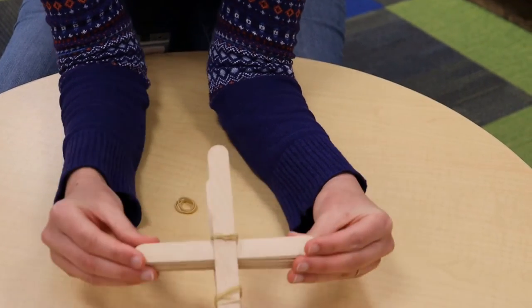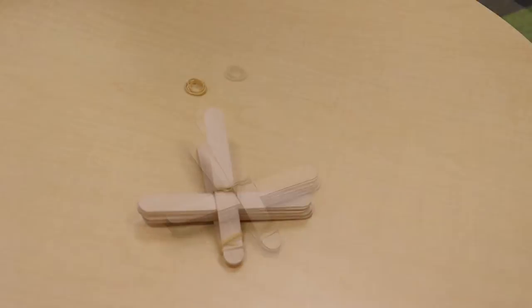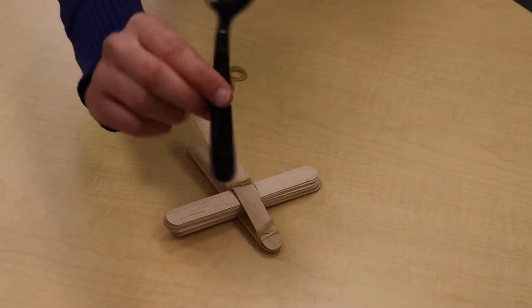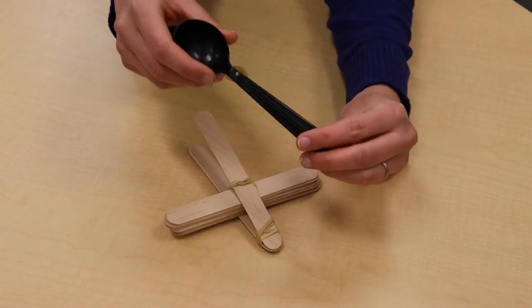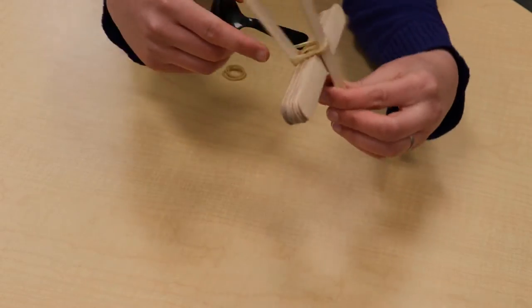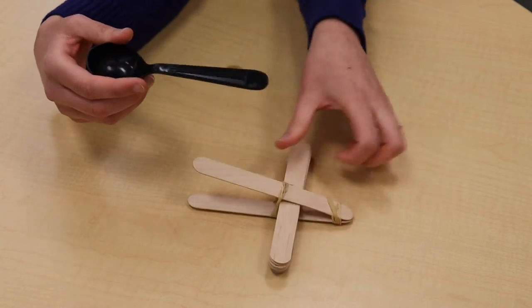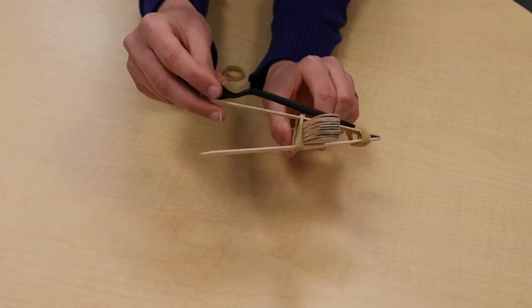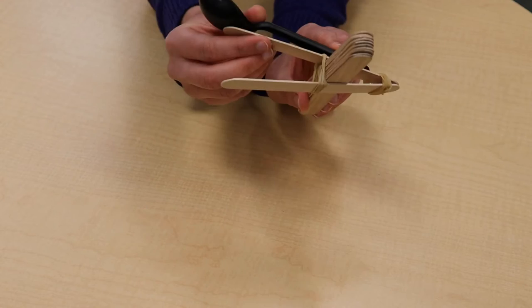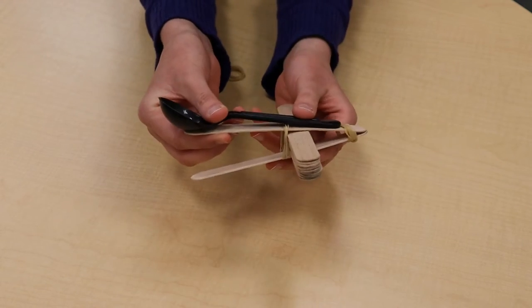Now we need to add a spoon. All right, so I've got my spoon here, and I have the catapult laying flat on the table. So for the top bit here, I'm going to attach the spoon over this top craft stick.